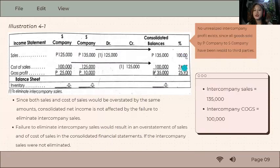There's also a computation here of the gross profit rate you get. After elimination, it's 25.93% gross profit rate which is 35,000 divided by 135,000. So let's say you didn't do this but you're asked how much is the intercompany sales.